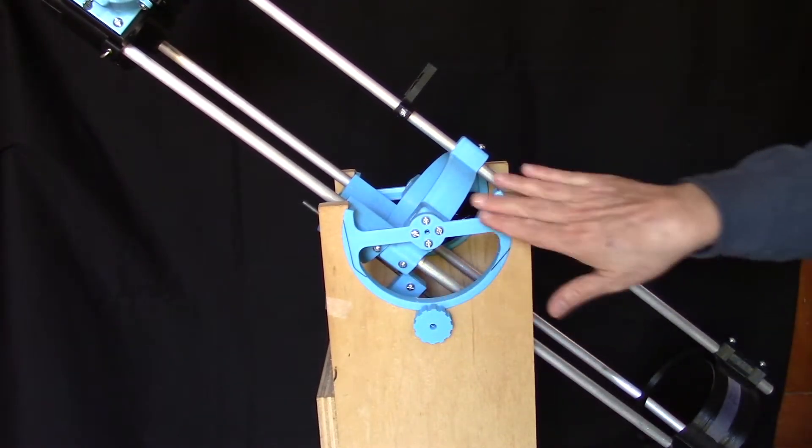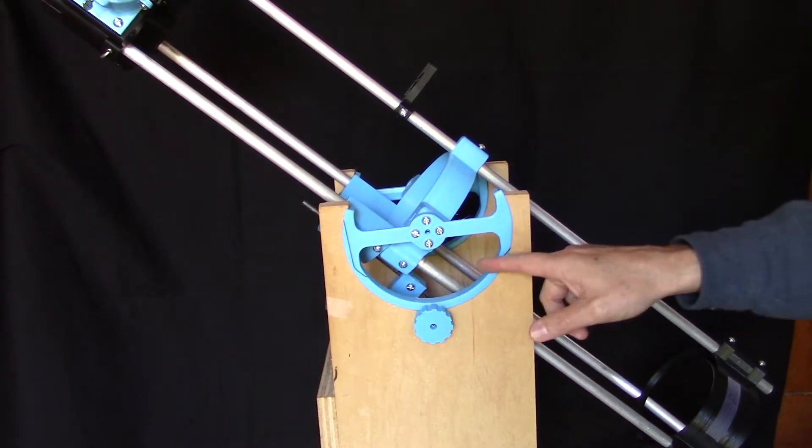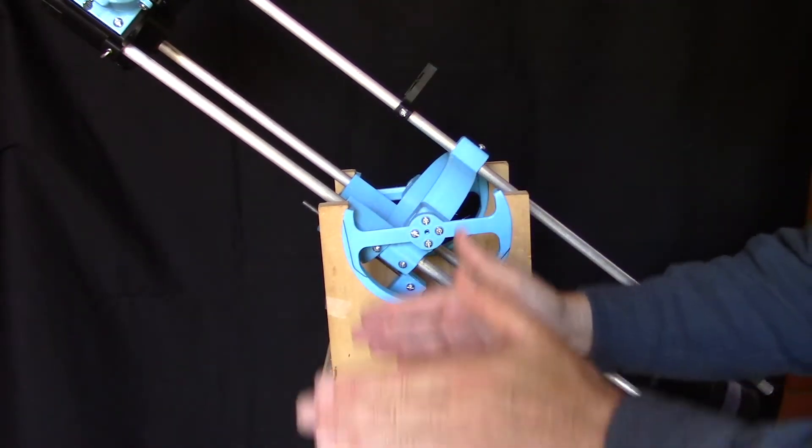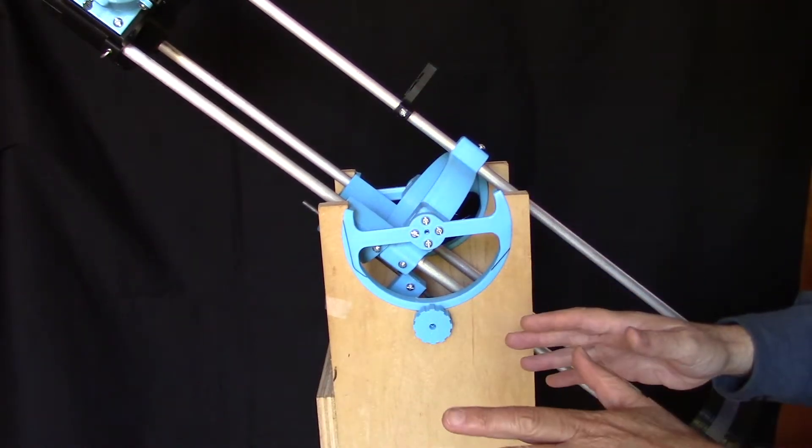So what I want to do is I want to replace this type of bearing here for something a little bit more improved and see if we can get a nice, smooth, gentle action with no jerking whatsoever.